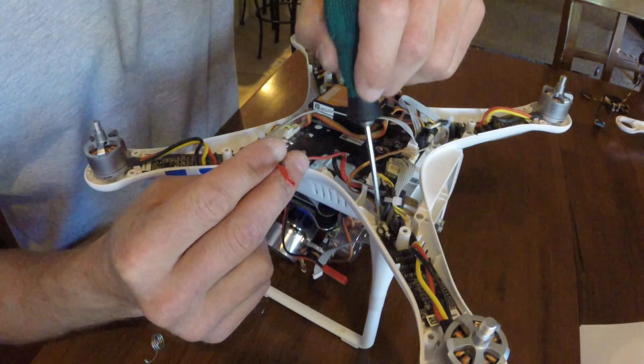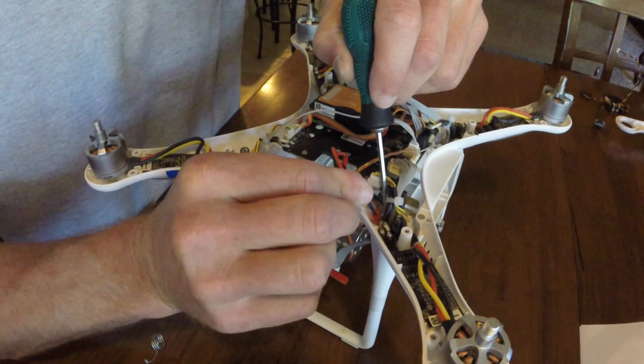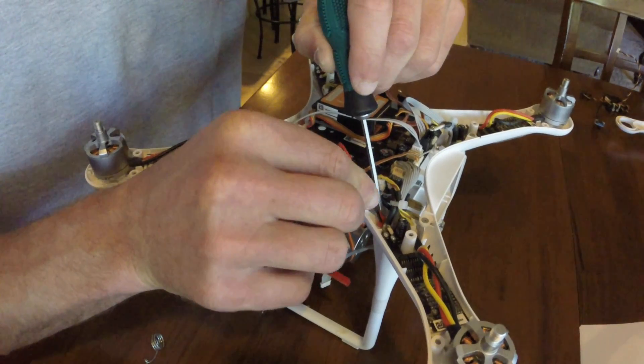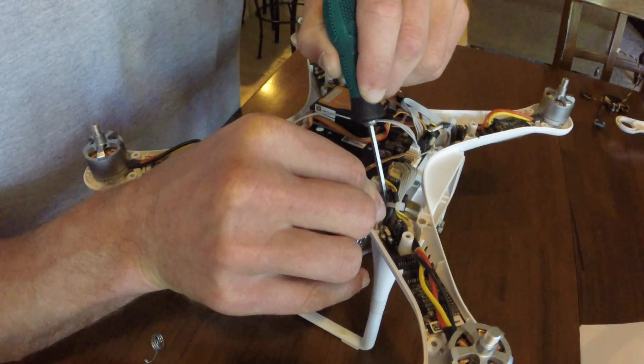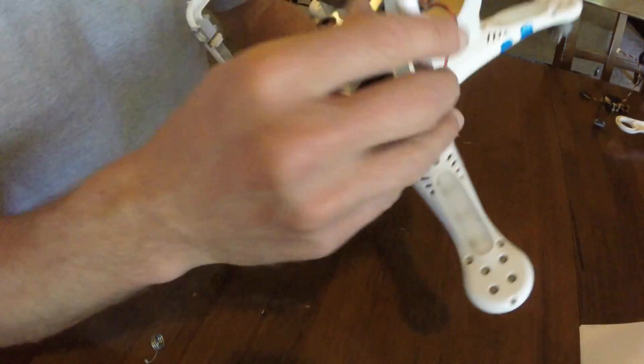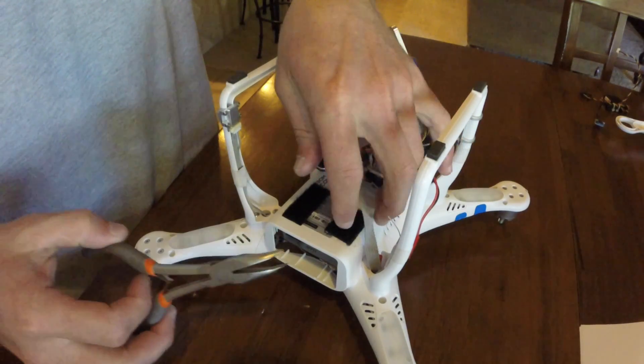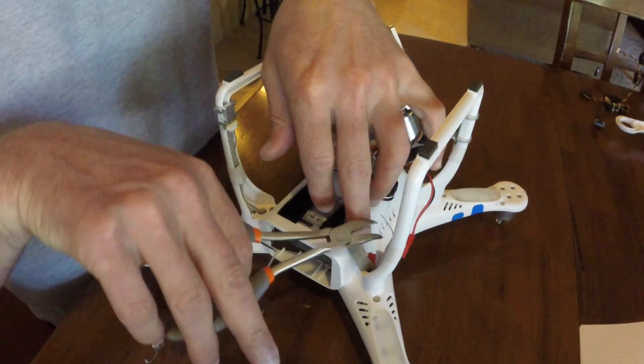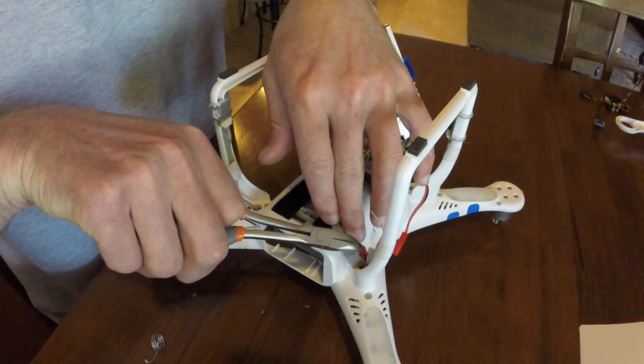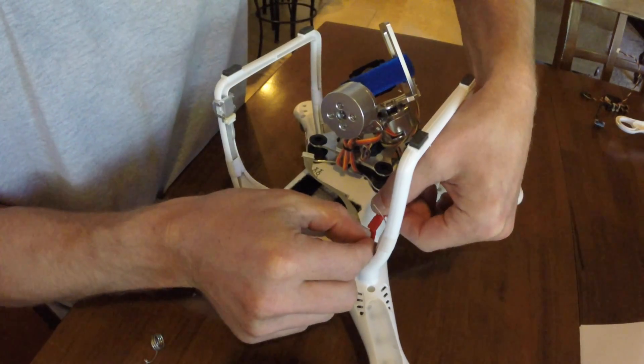Now you're going to take the power attachment and push it through one of the holes on the Phantom's arm. You can use a screwdriver to get it through and then use the pliers on the other side to pull it completely through. Once you have it through the arm, you're going to take the attachment off of the gimbal and the attachment from the power and connect them together.